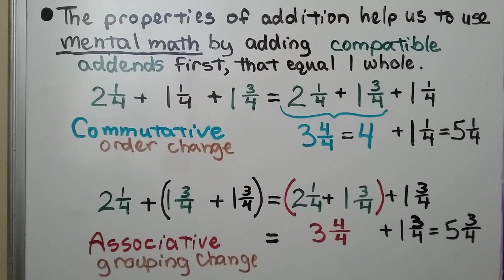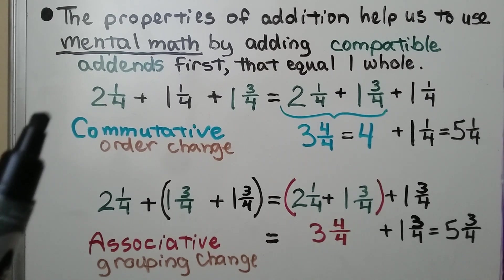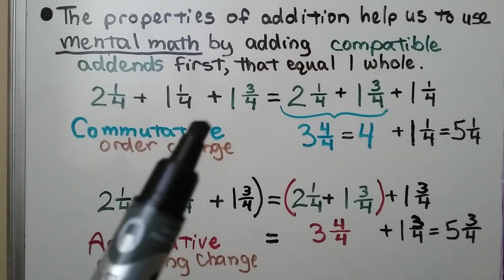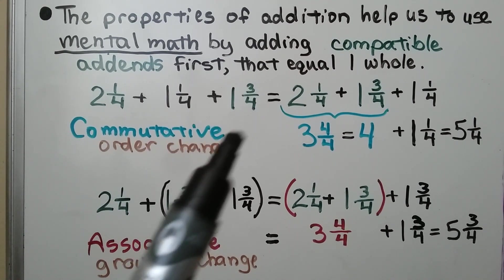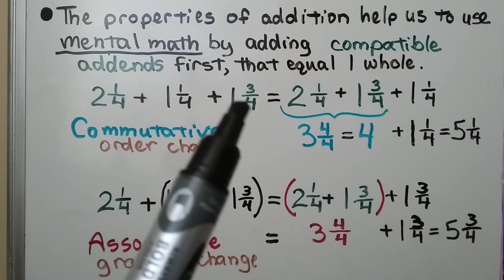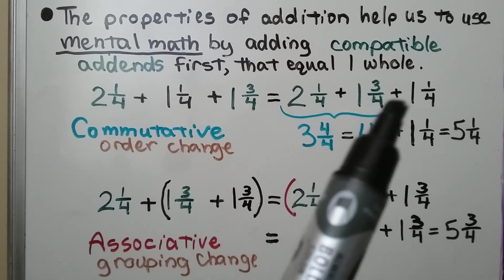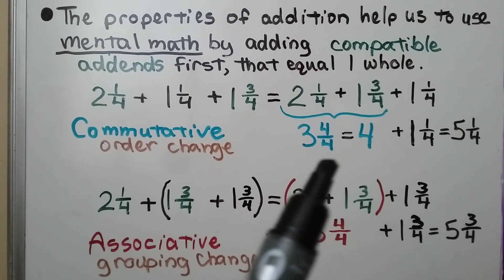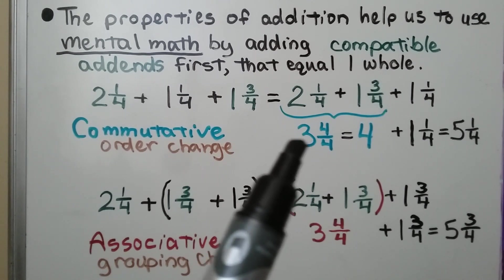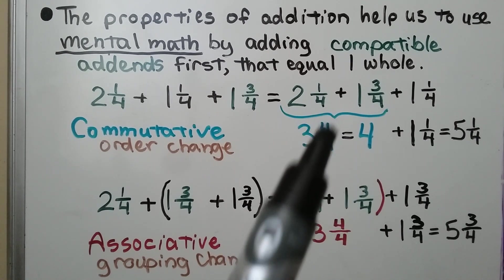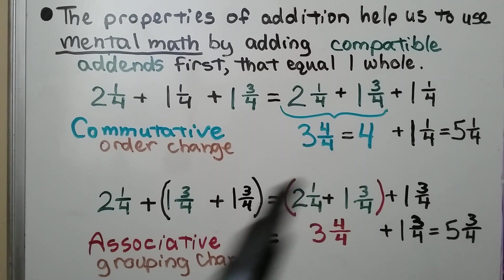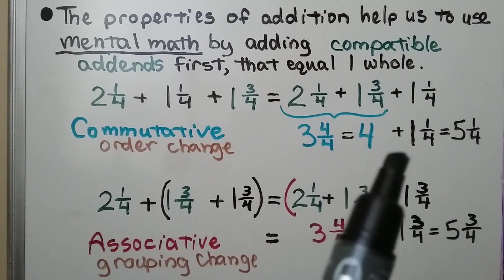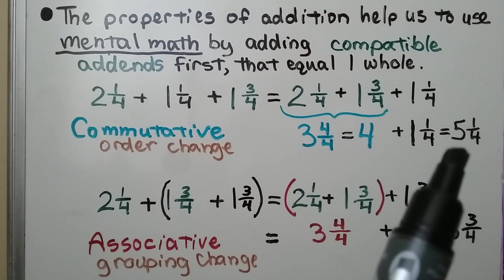The properties of addition help us use mental math by adding compatible addends first that equal 1 whole. We have 2 and 1 fourth plus 1 and 1 fourth plus 1 and 3 fourths. We move the addends so the 1 fourth and 3 fourths are together. They equal 4 fourths. The whole numbers 2 plus 1 equal 3, and 3 and 4 fourths equals 4. Then 4 plus 1 and 1 fourth equals 5 and 1 fourth.